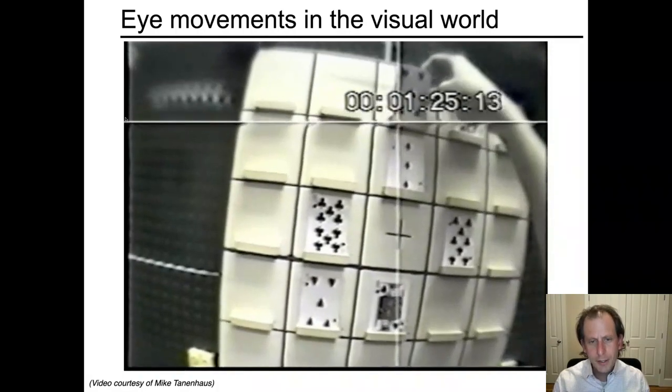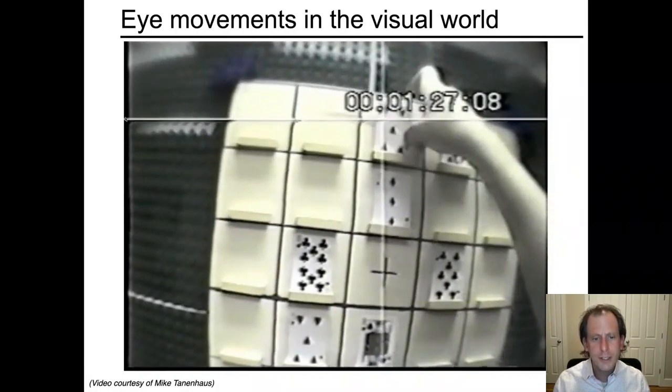Once again, the speaker didn't even get to the end of 'eight of clubs.' So this is what we call a sort of anticipatory eye movement or something based on prediction. 'That is above the' is enough to trigger the eye movement. It's sort of remarkable.